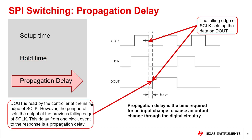Lastly, there are propagation delays. This term describes the time required for the signal from one line to change the signal from another. In the diagram, the S-Clock comes into the device and the controller reads DOUT on the rising edge of the clock. For the peripheral device, the falling edge of the clock sets up the next data bit so that by the rising edge, when the controller reads the device, the correct data is on DOUT. This delay time describes how long it takes from the S-Clock falling edge to place data on the DOUT line.